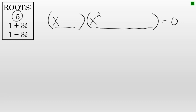If I first consider the root of x equals 5, then x minus 5 must be a factor. Because if I have an equation equal to zero with x minus 5 as one of the factors, setting x minus 5 equal to zero will give me the root of x equals 5.